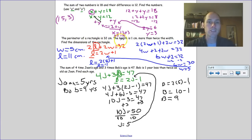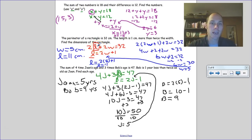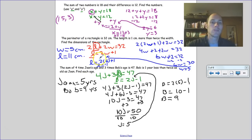The second problem: the perimeter of a rectangle is 32 and the length is one more than twice the width. Equations: 2l plus 2w equals 32, and l equals 2w plus 1. Since length is isolated, substitute into the perimeter equation: 2(2w plus 1) plus 2w equals 32. Solving gives w equals 5, then l equals 2(5) plus 1 equals 11. The width is 5 and the length is 11.